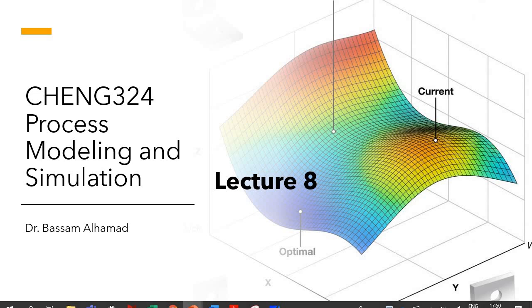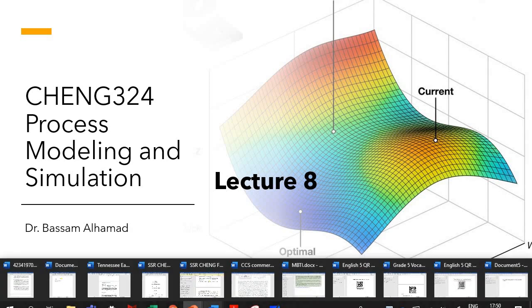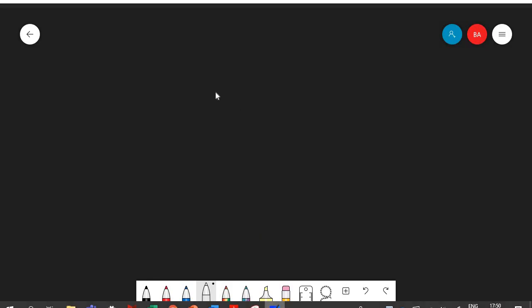Bismillah ar-Rahman ar-Rahim. This is lecture 8, Process Modeling and Simulation, Chemical Engineering 3 to 4. Dr. Bassam Al-Hammad is with you. Today we are going to take the last part of writing model equations for one of the systems we're going to cover, which is also a surge tank — however, for two components. Then we are going to deal more with linearization and go from the time domain to the S domain and state space domain, as mentioned in our introduction lecture 1.